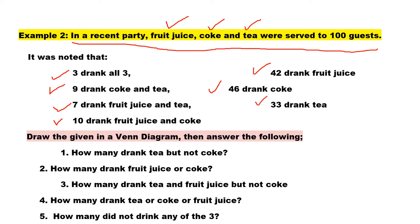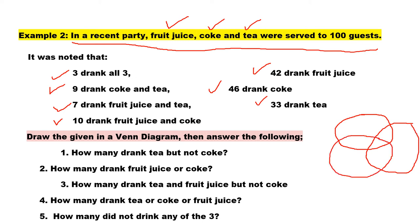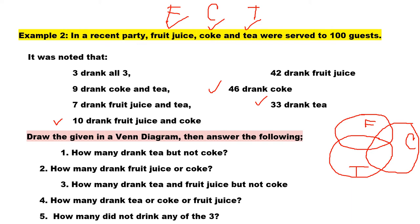Let us recall what we did before. First, we draw 3 overlapping circles to make a Venn diagram. We let letter F, C, and T be the names for each set. First to consider: the value for all three, which is 3 — drank all three. We place it in the very center. Then we consider the pairs: Coke and tea is 9, but we already have 3, so we place 6 there. 3 plus 6 equals 9.